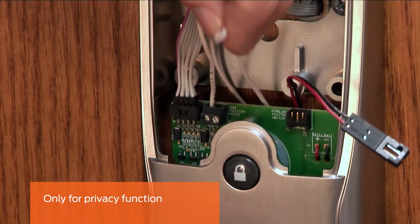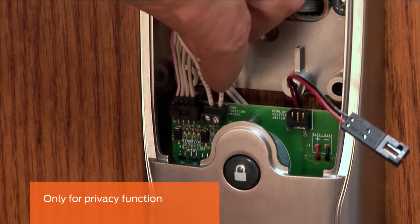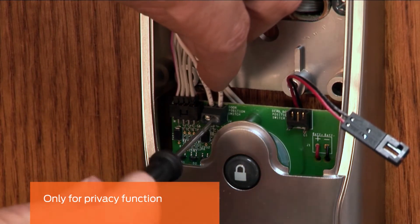This step is only for locks with the privacy function. Connect the door position switch wires into the terminal block.